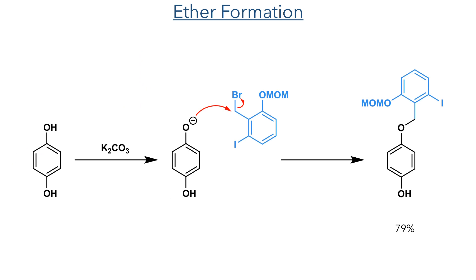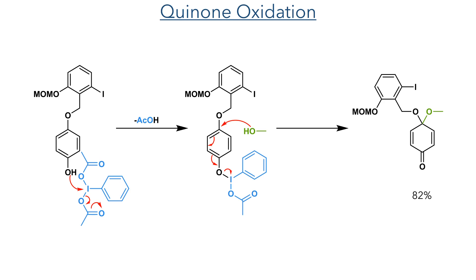In the next reaction, dihydroxyquinone was first deprotonated with potassium carbonate and the resulting phenolate displaces the bromide forming an ether linkage in a 79% yield. The remaining hydroxyl group was then oxidised by reacting with phenyliodine diacetate, which displaces an equivalent of acetic acid and activates the aromatic ring towards nucleophilic addition. Methanol present as solvent attacks at the para position, displacing the iodine species and forming the target quinone acetal in an 82% yield.